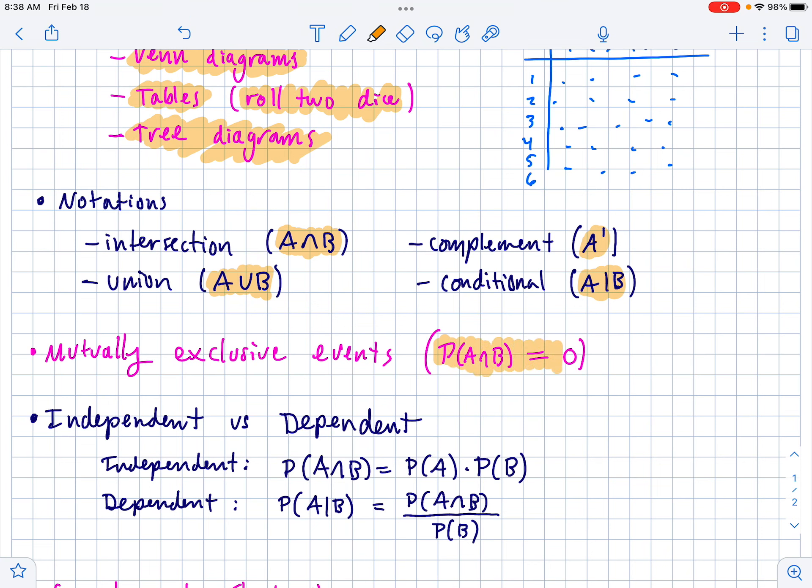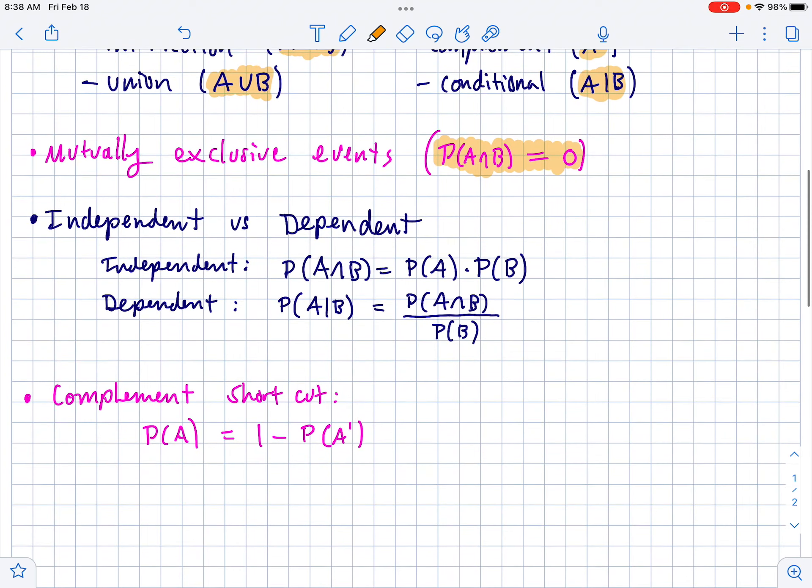Know the definition of mutually exclusive events, which means the intersection of two events is zero, or the probability of them happening at the same time is zero. That's another way to think of that.